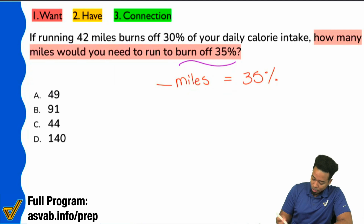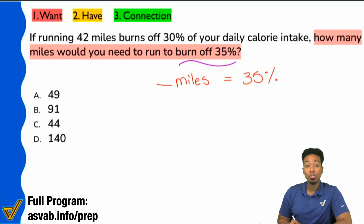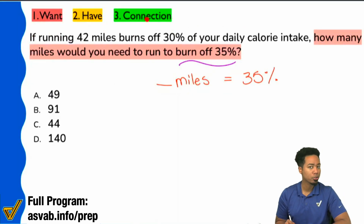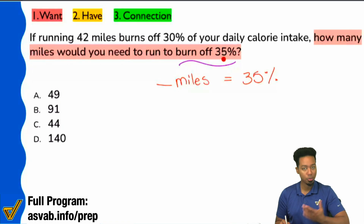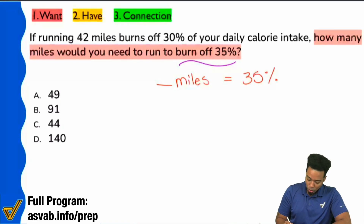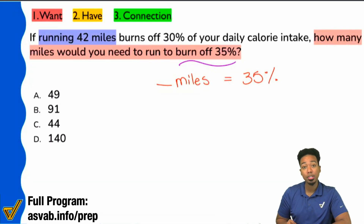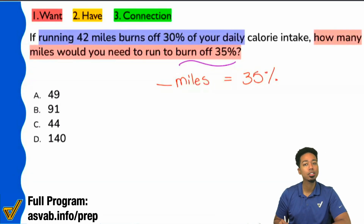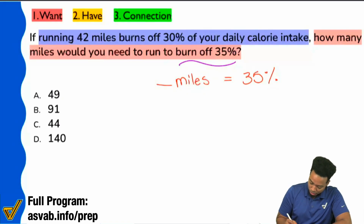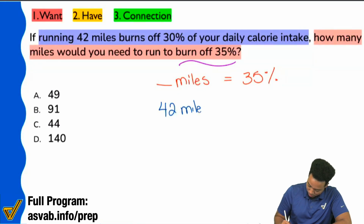So right over here, when we look at the information we have: if running 42 miles burns off 30% of your daily calorie intake, how many miles is associated with 35%? I'll highlight that and write it below: 42 miles corresponds with 30%.